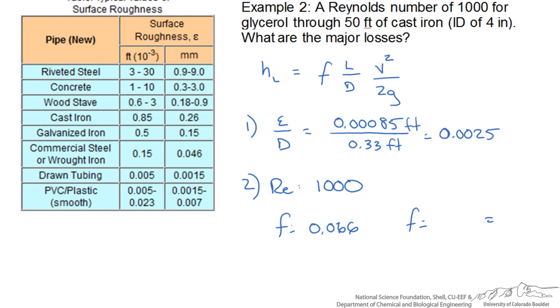So we read 0.066. We can also calculate it by 64 divided by 1000. This gives us a frictional factor of 0.064, so pretty close to how we read it.